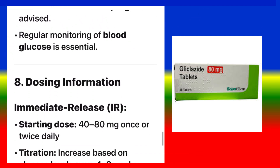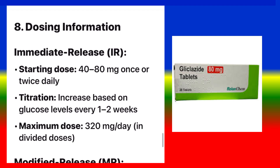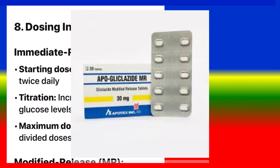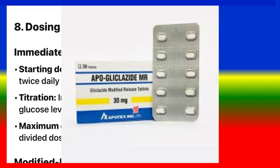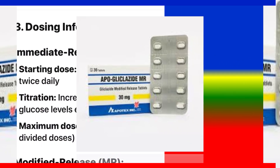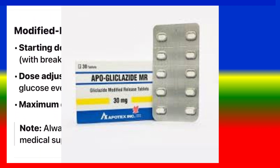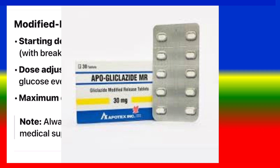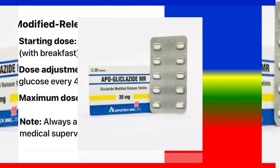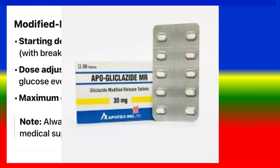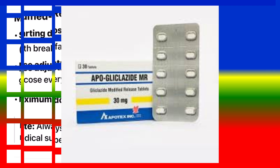Dosing information — Immediate release (IR): Starting dose 40–80 mg once or twice daily. Titrate based on glucose levels every 1–2 weeks. Maximum dose 320 mg per day in divided doses. Modified release (MR): Starting dose 30 mg once daily with breakfast. Dose adjustment based on blood glucose every 4–6 weeks. Maximum dose 120 mg once daily. Always adjust dose under medical supervision.